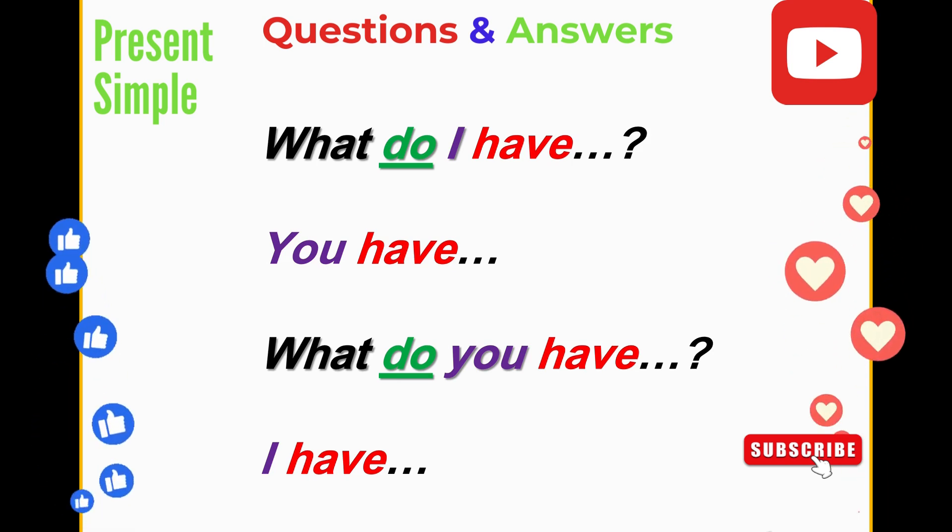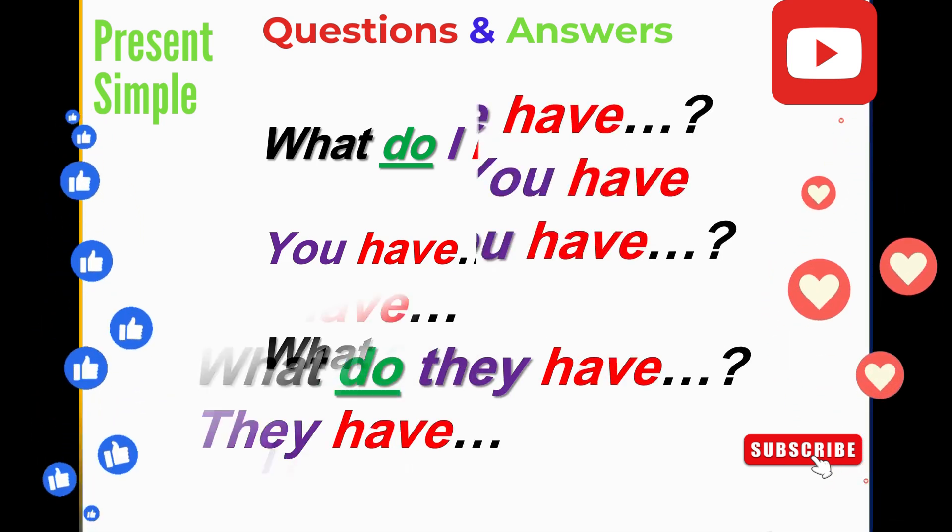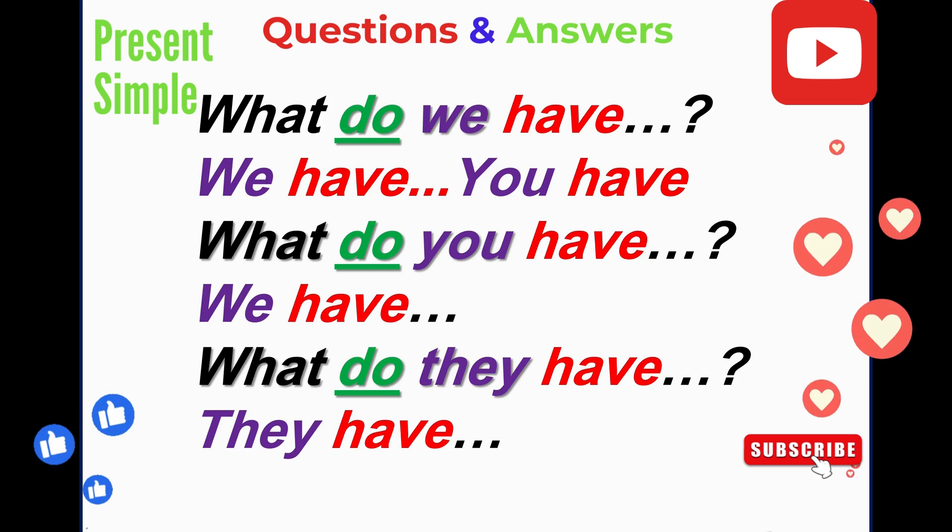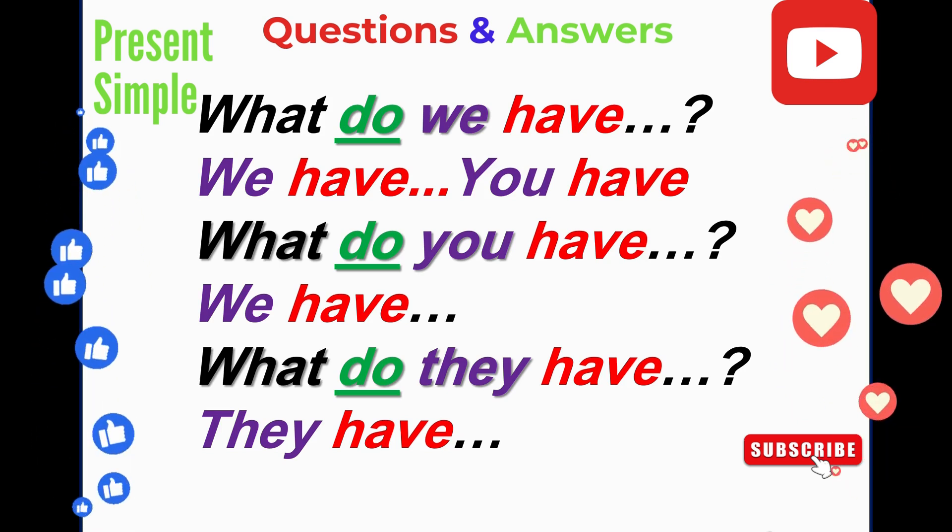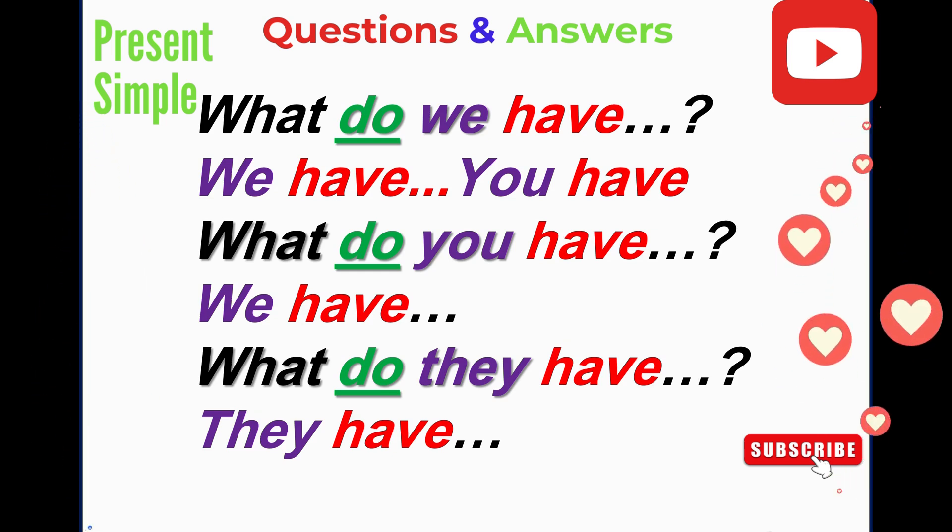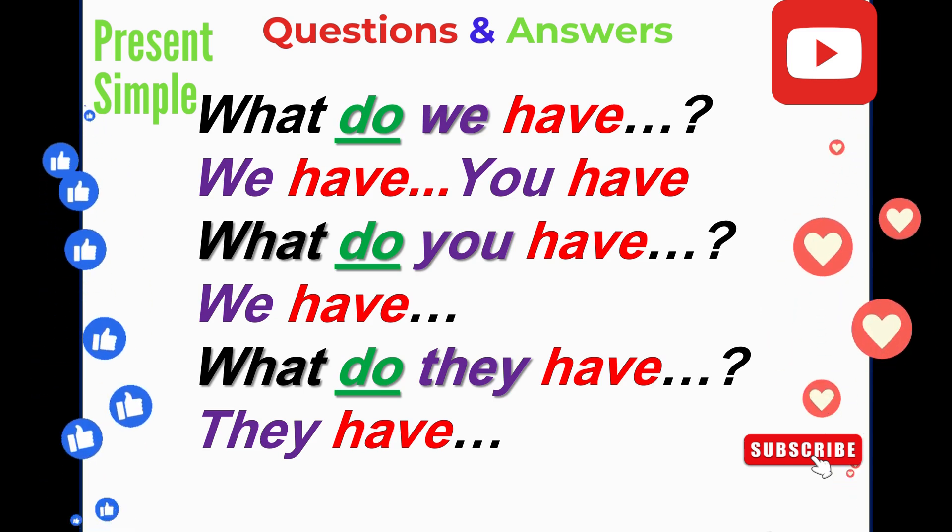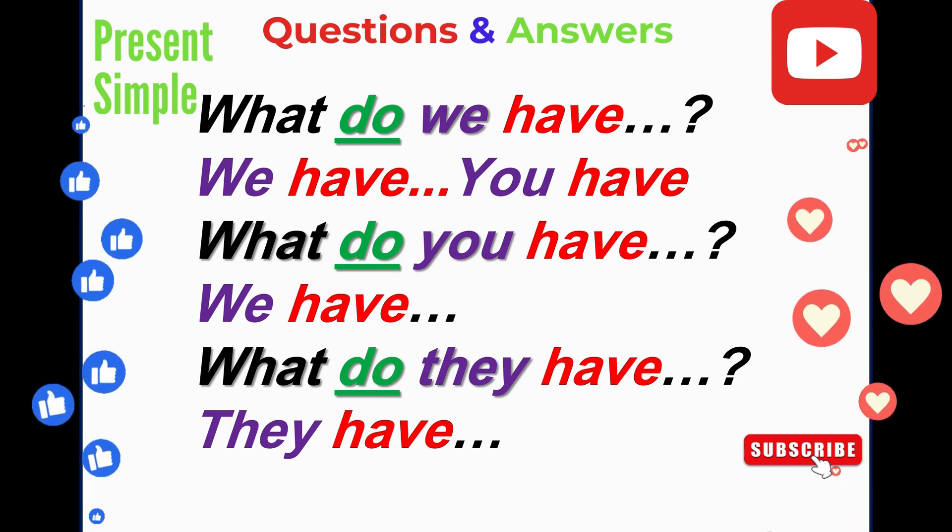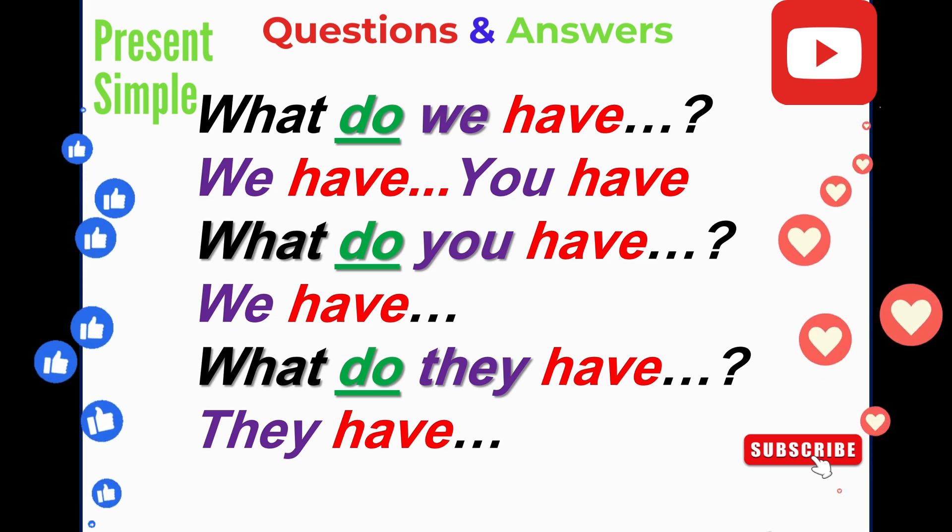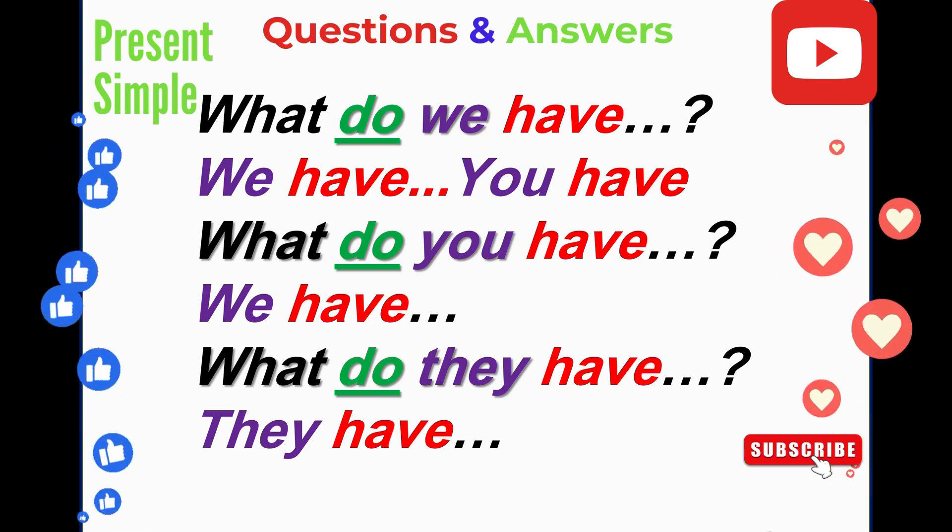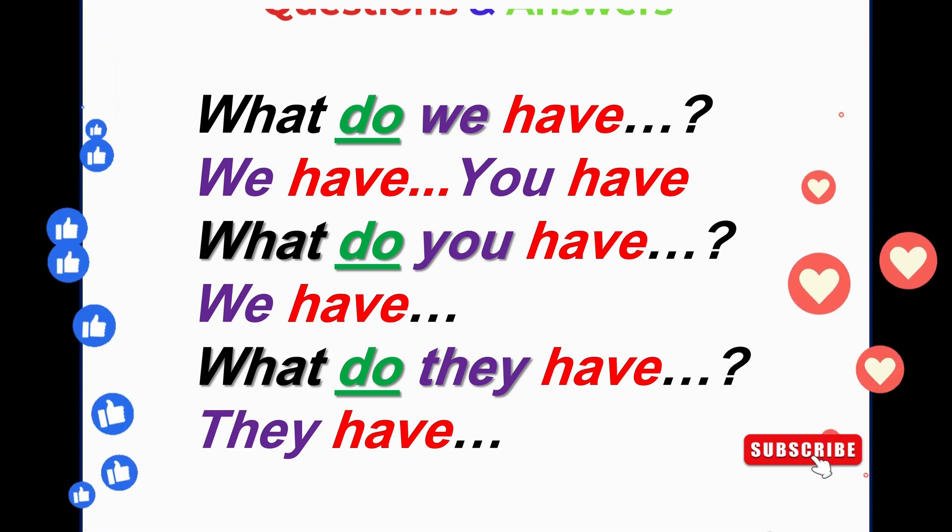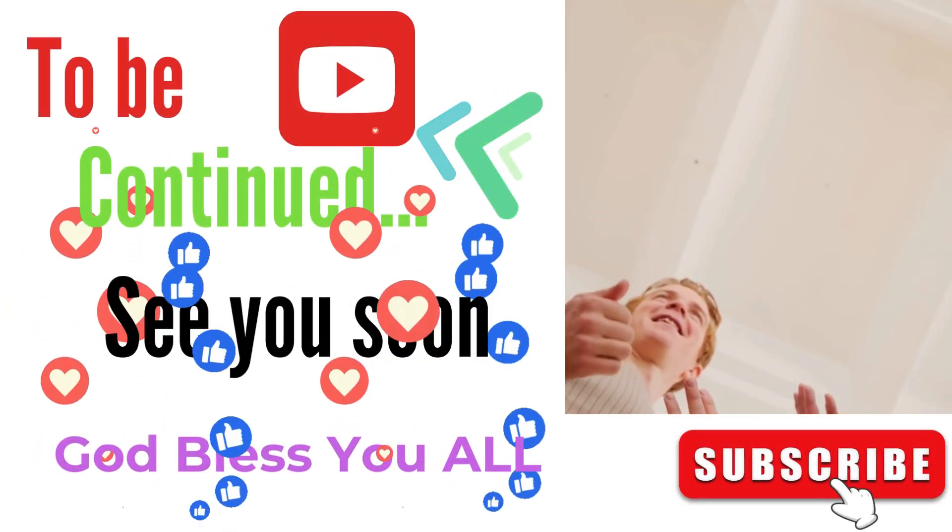Let's see plural form. What do we have? When we ask what do we have, we have two answers: we can answer we have this, or you can answer you have this. The third question in plural form: what do you (all, group of people) have? The answer: we have this. What do they have? I am asking about a group of people, and you say they have this.